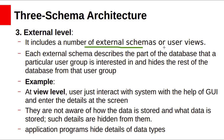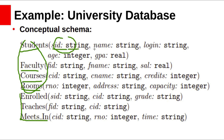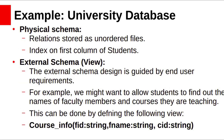At the external level, there are a number of external schemas or views. Each external schema describes the part of the database a particular user group is interested in and hides the rest. At the view level, users interact with the system through a GUI and see details on screen, without being aware of how data is stored or what data is stored. For the university database example, the conceptual schema includes entities: student, faculty, course, and rooms, with relationships enroll, teaches, and meets-in. Conceptual schema also defines data types — SID is of type string, student name is of type string, and GPA is of type real number. The physical schema has relations stored as unordered files, with indexes created on the first column of students, faculty, and courses relations. The external schema will differ for different users.